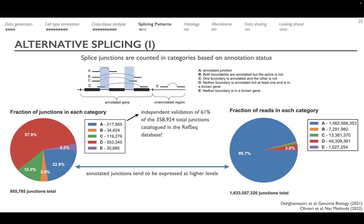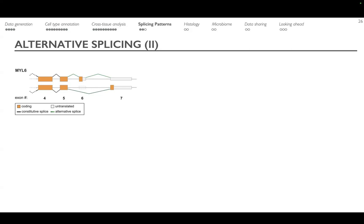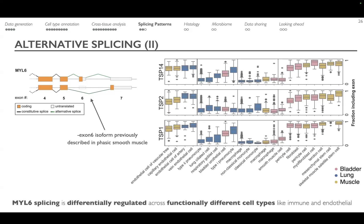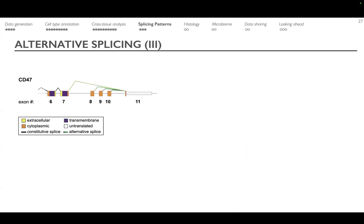Two genes we characterized for differential splicing: MYL6 — the exon 6 isoform and its absence have been previously described in vascular smooth muscle. Using Tabula Sapiens, we can look across different donors and cell types and confirm differential regulation of MYL6 splicing for different cell types in their respective functional groups. Indeed, we find evidence that MYL6 is differentially spliced according to the functional cell type in which it is expressed. A similar example is CD47, where there is also compelling evidence of differential splicing across cell types.